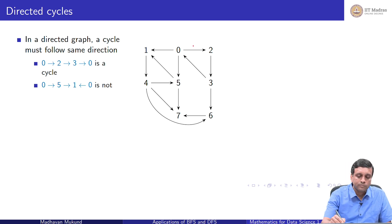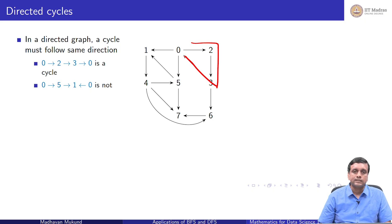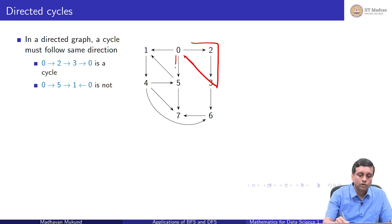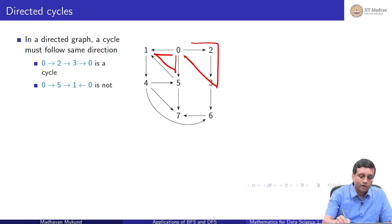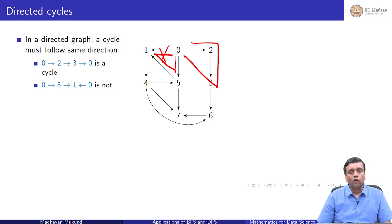For instance, I can go from 0 to 2, then from 2 to 3, and then come back from 3 to 0. This is a directed cycle because I am going forwards at every step. On the other hand, if I try to go from 0 to 5, then from 5 to 1, and then try to come back from 1 to 0, this is not allowed because the edge 1 to 0 is not in the correct direction.